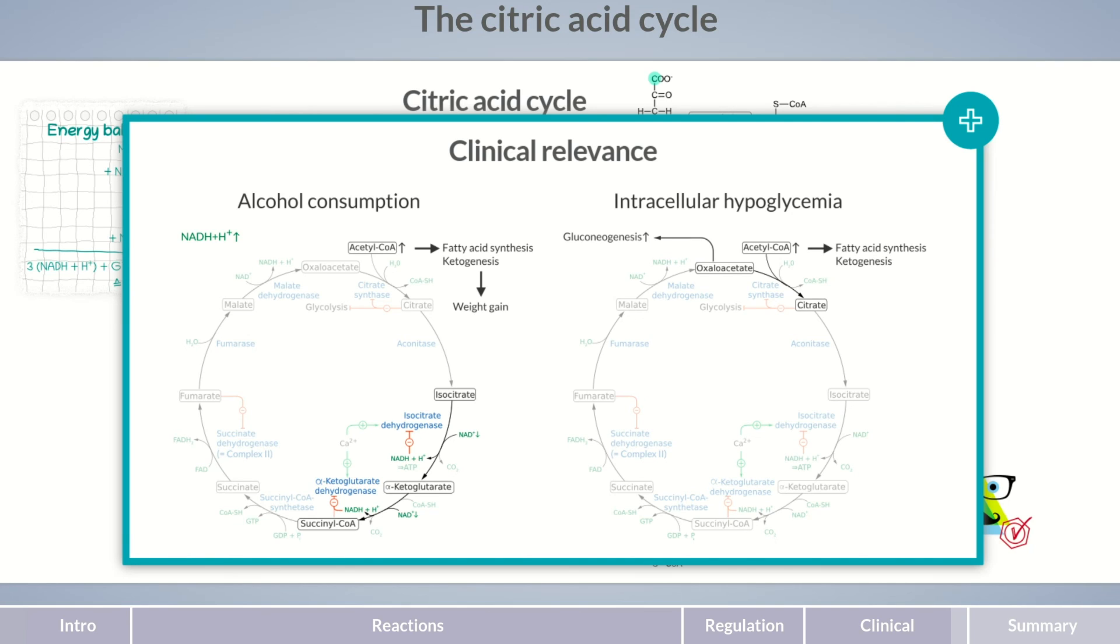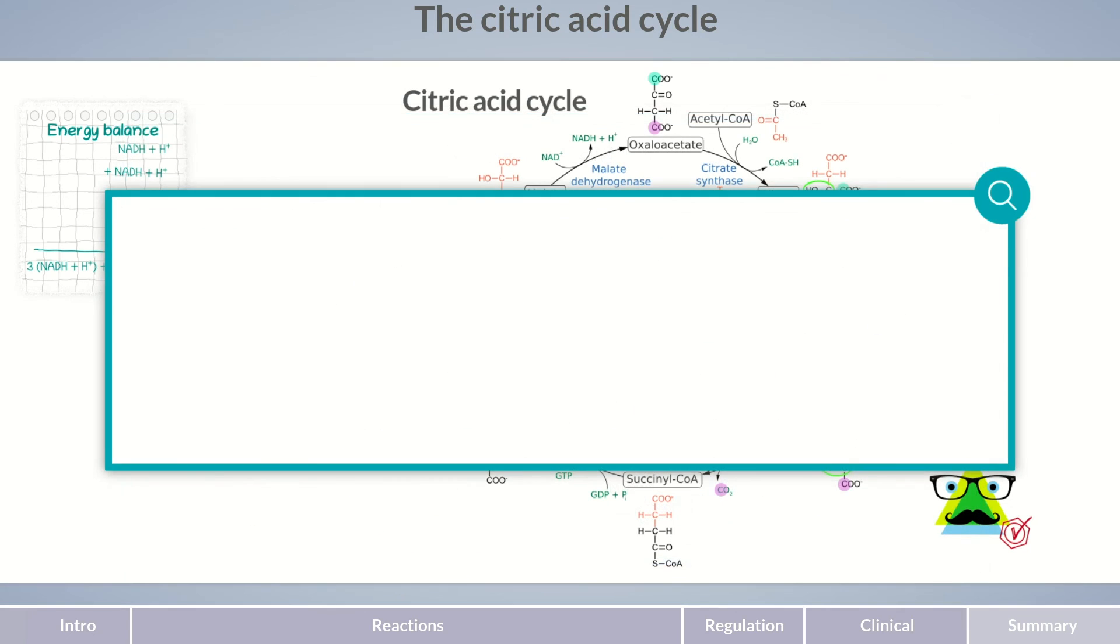Extremely high levels of ketone bodies lead to diabetic ketoacidosis. We'll delve deeper into ketogenesis in episode 12 of this course. Let's finish off by summarizing the most important points of the citric acid cycle.